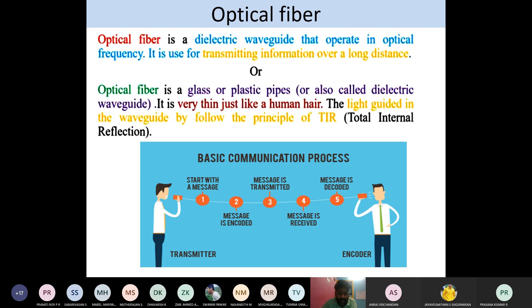The information passes through the fiber and reaches the receiver circuit. Here the encoded signal is decoded — the optical information is converted back into an audible signal. This is the purpose of the optical fiber: we use it to transmit information over a long distance.